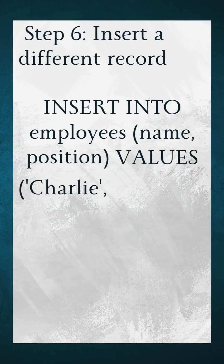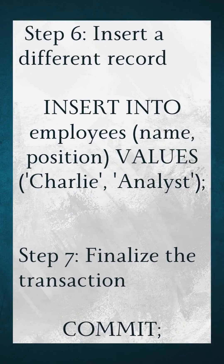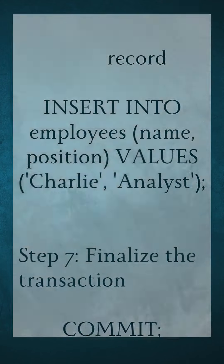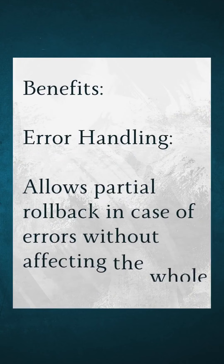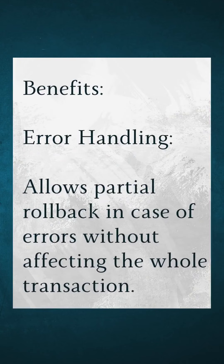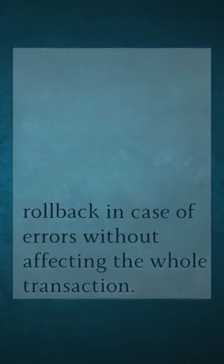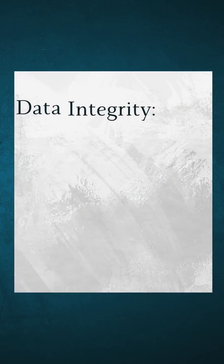This would undo both Alice and Bob's insertions, which may not be desirable if Alice's insertion was correct and should remain. Hence, save points enable undoing only the erroneous part of the transaction while preserving the valid part and continuing with the other operations.